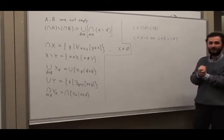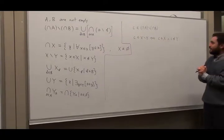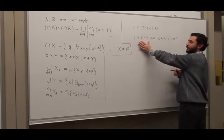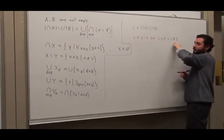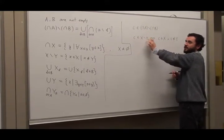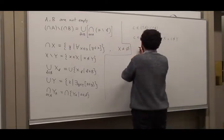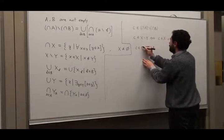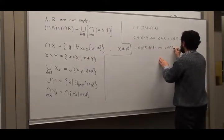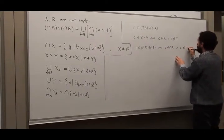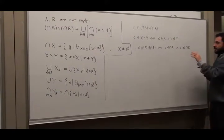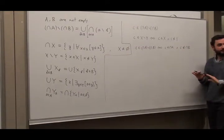Applying this substitution — X is intersection A and Y is intersection B — c being an element of intersection A minus intersection B is equivalent to: c is an element of intersection A, and c is not an element of intersection B. Let's leave it there for now as the expansion of the left-hand side.